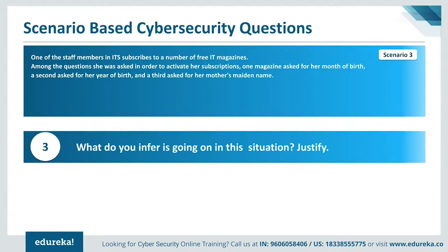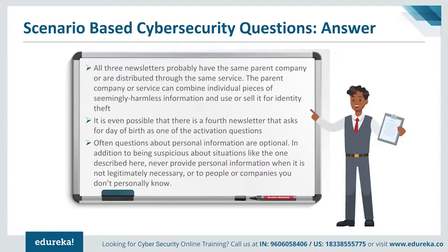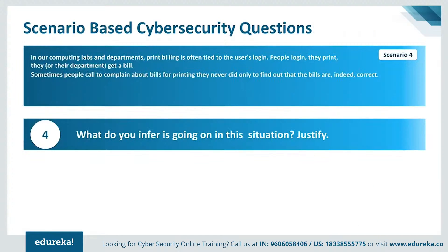Scenario 3: A staff member subscribes to free IT magazines. One magazine asked for her month of birth, a second for her year of birth, and a third for her mother's maiden name as activation questions. All three newsletters probably have the same parent company or are distributed through the same service. The parent company can combine individual pieces of seemingly harmless information and use or sell it for identity theft. Never provide personal information when it is not legitimately necessary or to companies you don't personally know.